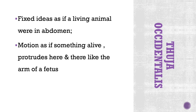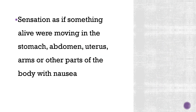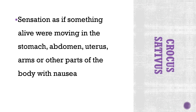In the case of Thuja occidentalis, they will be having the sensation as of something alive that protrudes here and there like the arm of a fetus. Next drug: sensation as of something alive and moving in the stomach, abdomen, uterus, arms, or other parts of the body. In Thuja, we have seen it only in the abdomen, but in Crocus sativus they have this sensation in the stomach, abdomen, uterus, and even in the arms.